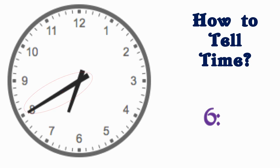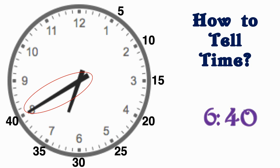Now, let's take a look at our minute hand. To read the minutes, we need to skip count or count by 5s. Let's count: 5, 10, 15, 20, 25, 30, 35, 40. That means that our long hand is indicating 40 minutes. So, the correct time is 6:40.